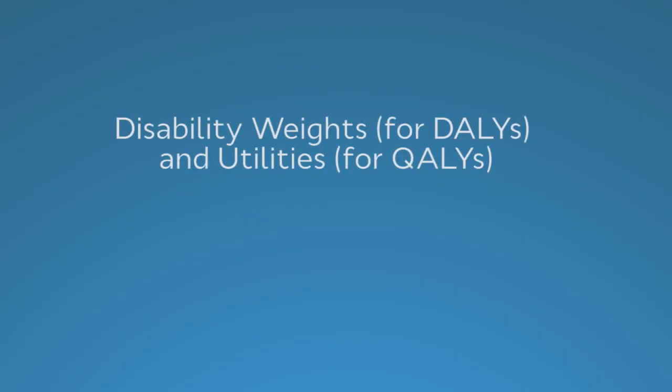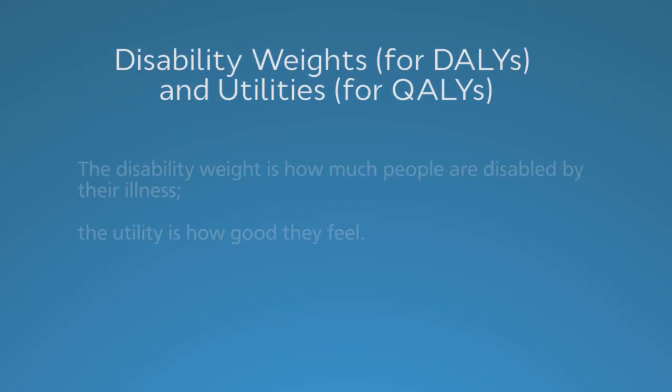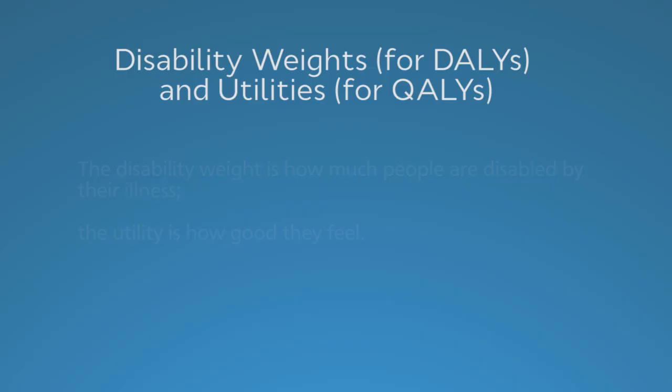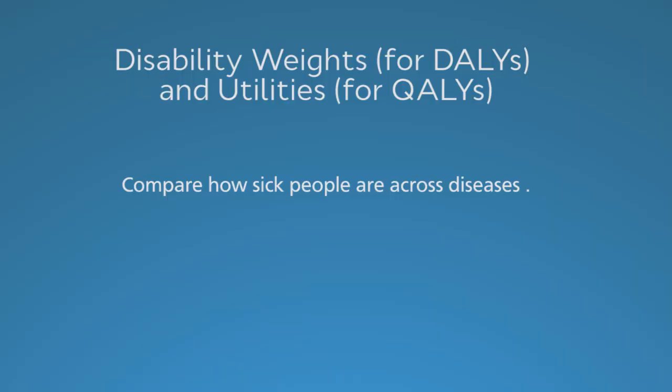Now I'm going to say more about an issue only briefly mentioned in the video — how we quantify morbidity: the disability weights used in DALYs and the utilities used in QALYs. The disability weight is how much people are disabled by their illness; the utility is how good they feel. Both are on a scale of 0 to 1. A disability weight of 0 means no disability or fully healthy, while a utility of 1 means healthy. Both present the relative severity of different diseases, disease stages, and disease events, and you can compare how sick people are across diseases whether you're using disability weights or utilities.